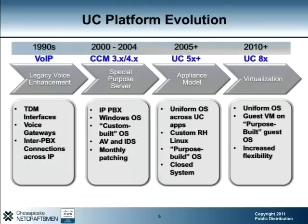The Cisco UC platform has evolved over the past two decades, starting with Voice over IP in the 1990s. The core use case for Voice over IP was linking disparate TDM PBXs over a packet-based network. As the name suggests, Voice over IP was all about the network. In 2000, Cisco began offering an IP telephony solution with Call Manager 3.0. This application ran on Microsoft Windows platforms, which remained the staple OS for all Call Manager 3 and 4 versions through 2004.